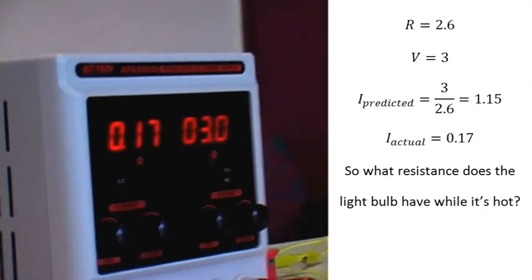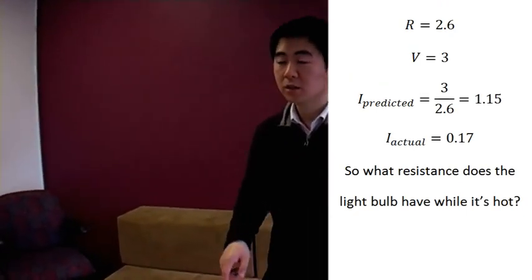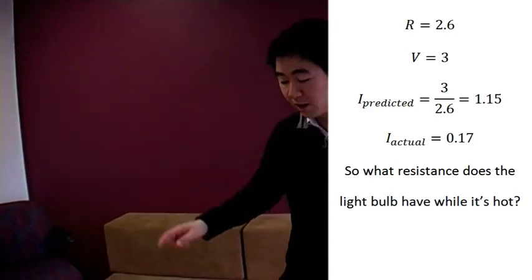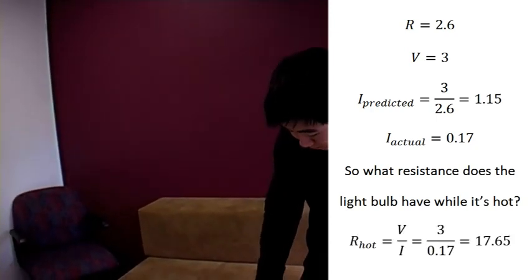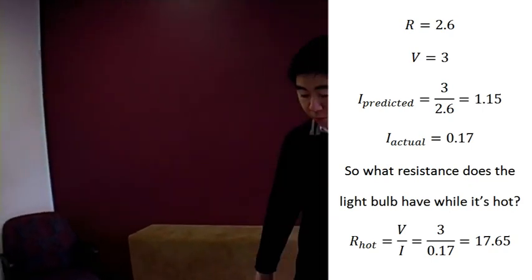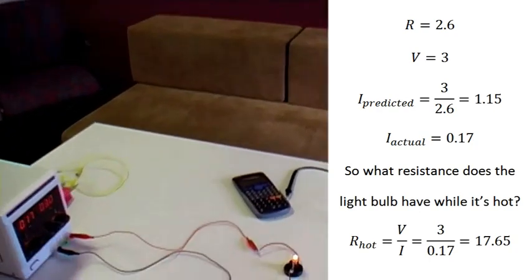What does that imply? If we use Ohm's law on these two bits of information. 3 volts only pushes 0.17 amps. Push that into Ohm's law. V equals IR. So make R the subject because that's what we're trying to find. R equals V on I. So V is 3, divided by 0.17. The resistance is actually 17.64 Ohms.